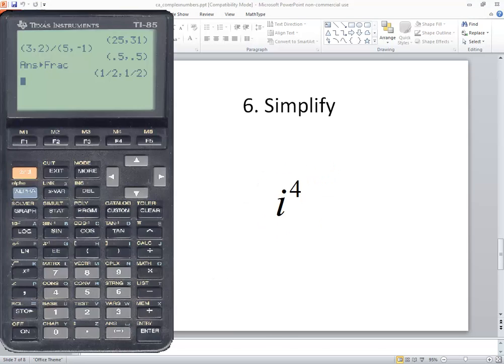Okay, i to the fourth. You have to think what this represents. We've got beginning parentheses, our real part is zero, comma, our imaginary part is one, closing parentheses, because there's a one in front of the i here.